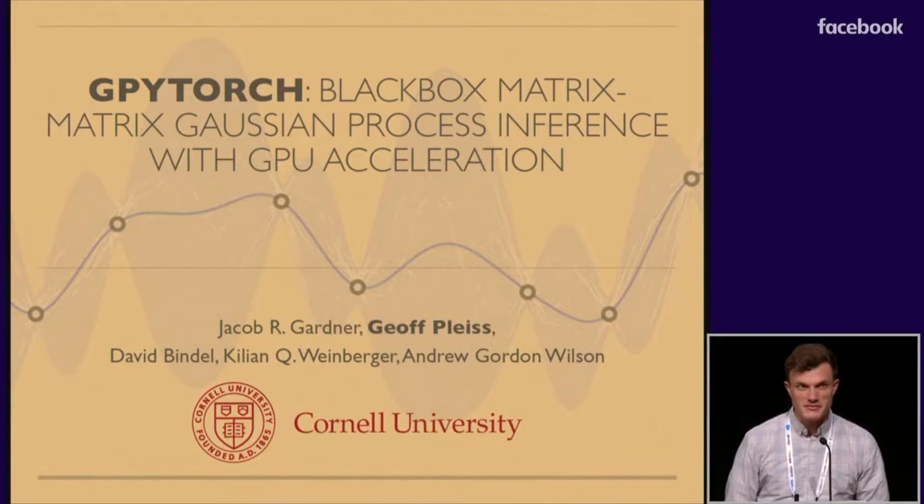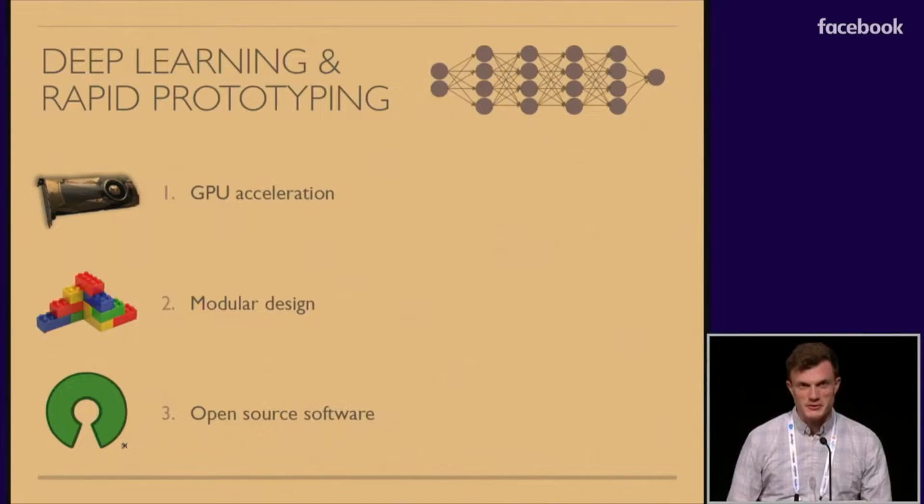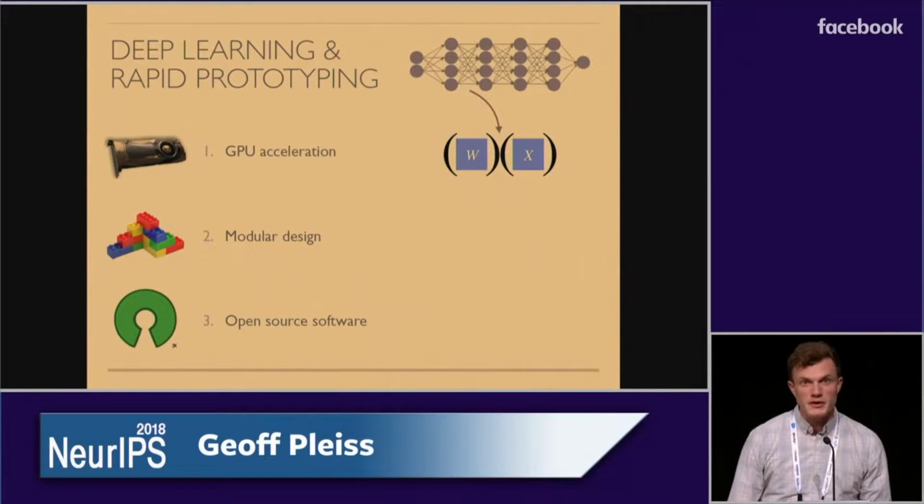Before I talk about Gaussian processes, I want to talk about deep learning and why it's so awesome to train neural networks today. Neural networks are really fast. They make really efficient use of modern computing hardware like GPUs, and this is especially true because a lot of the operations with neural networks essentially boil down to matrix multiplication, which is really efficient and parallel.